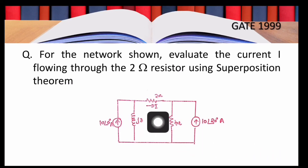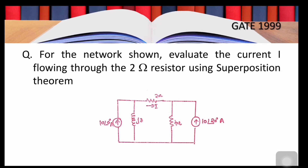Coming back to our question, we need to find the current i through the 2-ohm resistor using superposition theorem. According to the theorem, the response in a linear circuit can be obtained by adding the responses caused by separate independent sources acting alone. To calculate the response caused by a particular independent source, we replace all other independent voltage sources with short circuits and all other independent current sources with open circuits, then calculate the desired quantity. This network has two independent current sources: 10∠0° and 10∠20°.